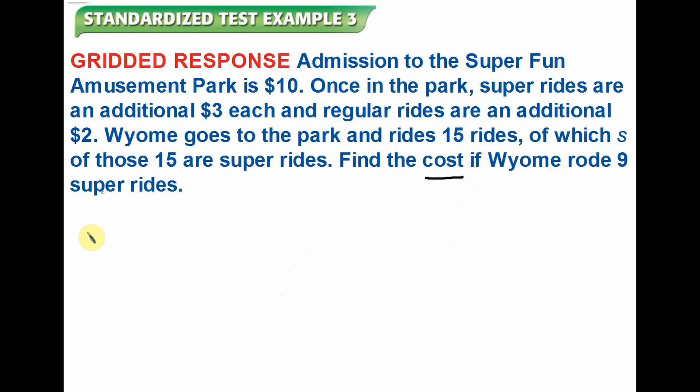In order to find the cost, let's see. I'm going to write C equals, whether you're riding 10, 15, 20, 100 rides, you have to pay $10 for admission fee, plus they are saying you have to pay $3 for any of your super rides, and then $2 for any of your regular rides. It is also saying that Wyoming rode 15 rides. Among 15, 9 of them were super rides. So in here, let me write another equation on the side saying that if I rode together 15, and among 15, 9 of them were super rides, then I can easily find how many rides were the regular one. 9 plus what would give you 15? The answer is 6.